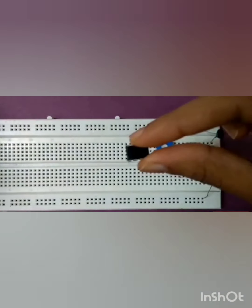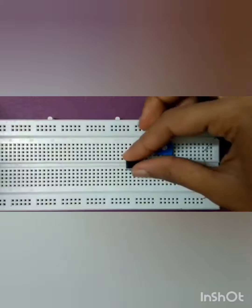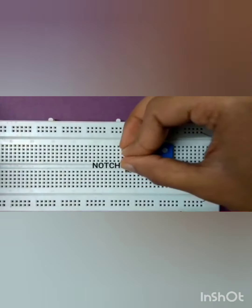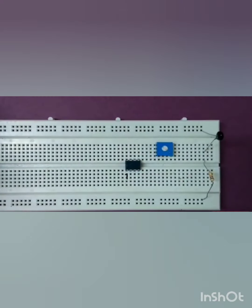Now we will place ICLM 358 on breadboard with its notch facing towards the left. So this is pin number 1, 2, 3, 4, 5, 6, 7 and 8.